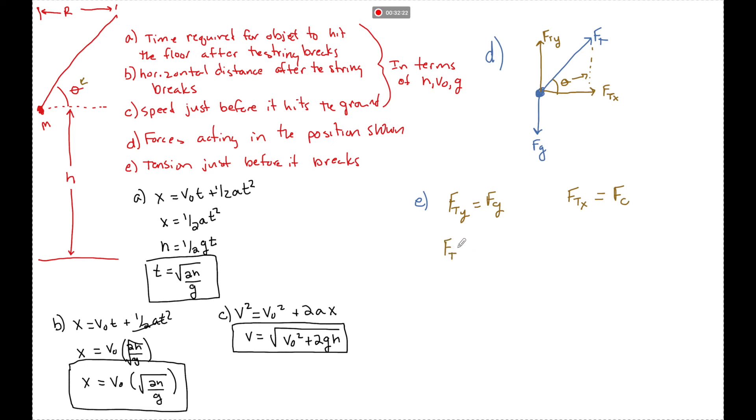So ft y is really just the ft, the hypotenuse, times the opposite sine theta, which is going to be equal to mg. So the ft we could say is equal to mg over sine theta.